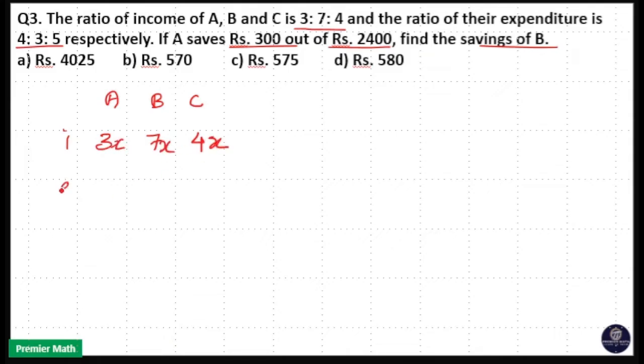Their expenditure is in the ratio 4 is to 3 is to 5. I will take it as 4y, 3y and 5y. So we have to find out the savings of B here.